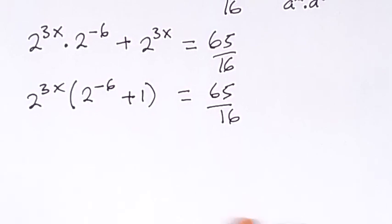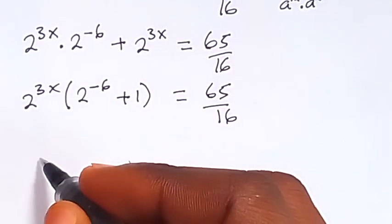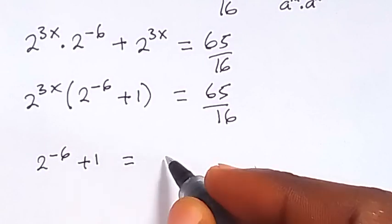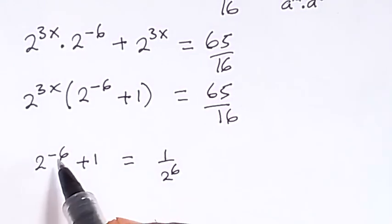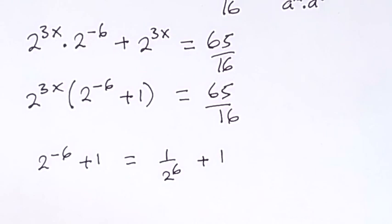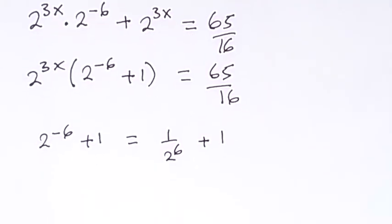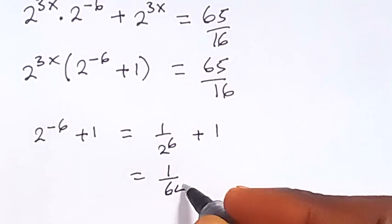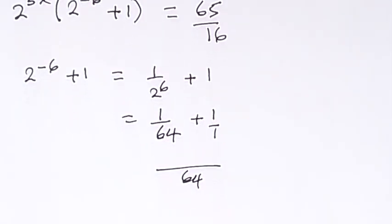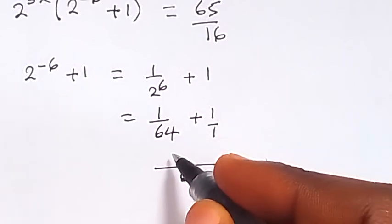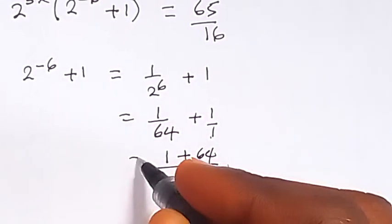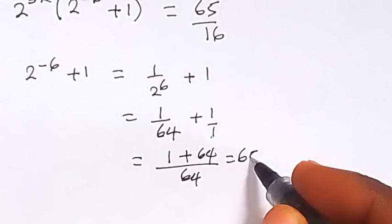Now, 2 raised to power minus 6 plus 1 can be written as 1 over 2 raised to power 6, because from the law of indices a negative power means 1 over that power. Then plus 1, and 2 raised to power 6 is 64. So this gives us 1 over 64 plus 1. Bringing it together with a common denominator of 64, we get 1 plus 64 over 64, which equals 65 over 64.